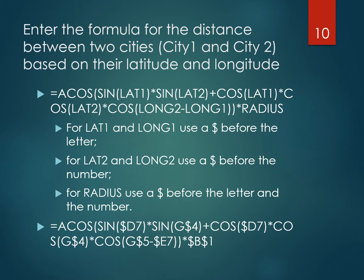For latitude 1 and longitude 1 we place the dollar sign before the column letter, so when we copy across the letter does not change. For latitude 2 and longitude 2 we put a dollar sign before the row number, so when we copy down the number doesn't change. For the radius we put a dollar sign before both the letter and the number, so it doesn't change when copying in either direction.